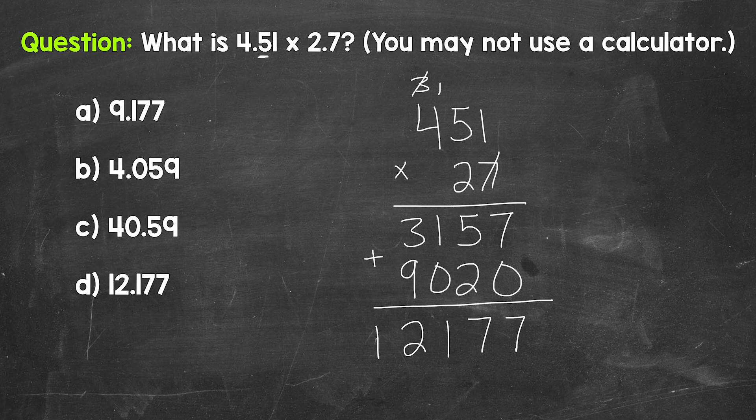Well, this five is one. This one is two. And this seven is three. So we have three decimal digits in our original problem.